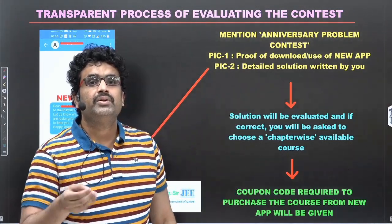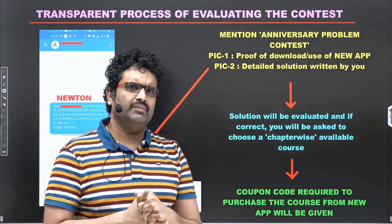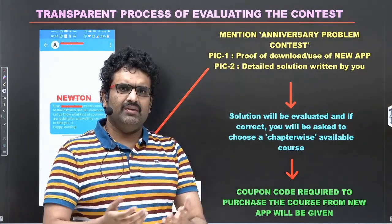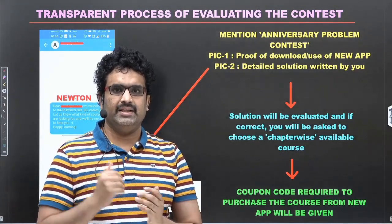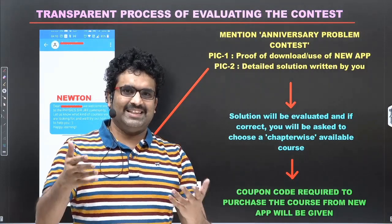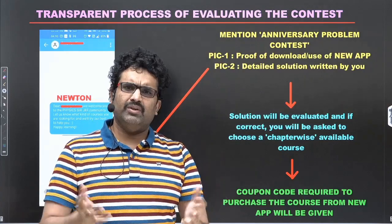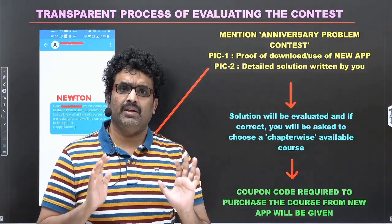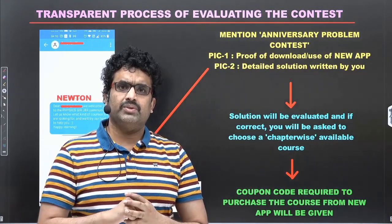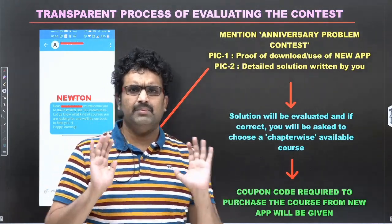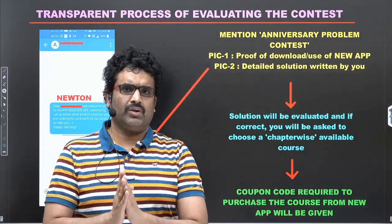Picture two should be the detailed solution written by you. I expect most students to send handwritten solutions. It should be legible and understandable to me, and it should be detailed — you can't just write the answer and send it. Even if the answer is right, it won't be considered unless it is a stepwise solution. Imagine you are applying for Olympiads where you write subjective solutions. It should be legible enough — I am a decent teacher and I will be able to understand whether you have written it with proper explanation.